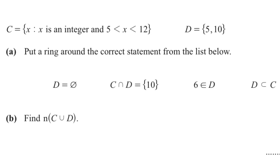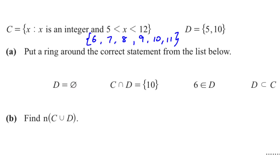Question 7: We have two sets, C and D. The elements of set D are 5 and 10. For set C, x is an integer such that 5 < x < 12, so the elements are 6 through 11 — we cannot take 5 or 12 as there is no equal sign. Part (a): from the list, C ∩ D is the correct statement. Intersection means an element belongs to both sets. Set C has 10 and set D also has 10, so C ∩ D = {10} is the answer.